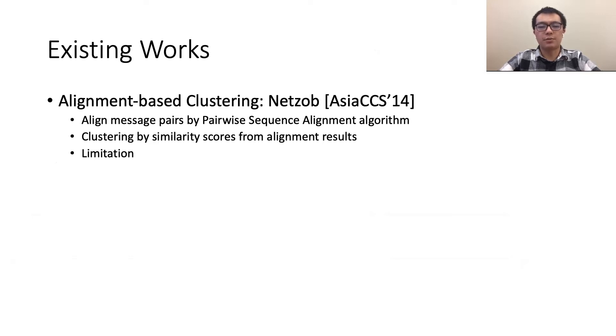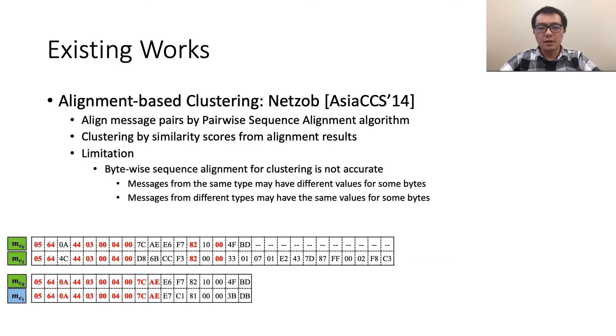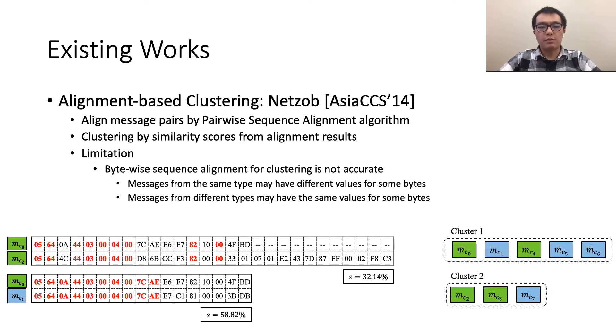The alignment-based clustering methods work on assumptions that messages are of the same type if they have similar sequences of values. However, this is not true all the time. For example, let's look at the alignment results of the two pairs. The red bytes are the same value aligned together. We can see that the pair of the same type has no more similarities than pair of different types. Based on this weak assumption, it generates two clusters and both contain messages of different types. Another limitation is that it is sensitive to a threshold of similarity scores to decide which clusters should be merged together and different protocols should use different values.